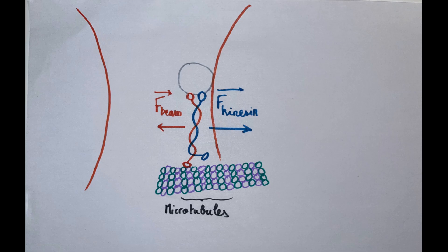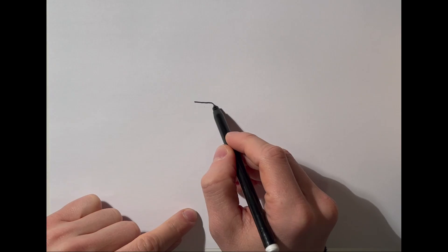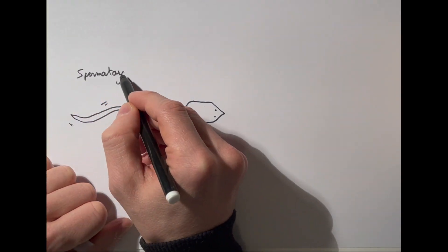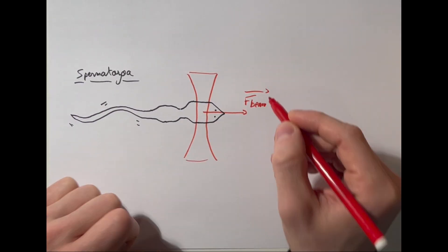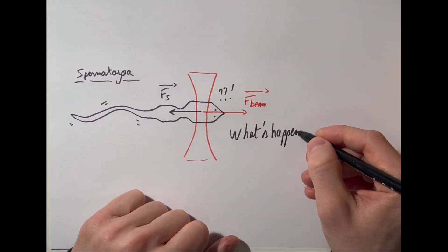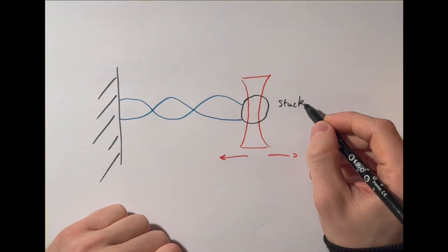Now, let's see some concrete applications. Optical tweezers are used in many fields of science. In biophysics, they can be used to study the forces exerted by molecular motors such as kinesin. In cell biology, they help manipulate cells without damaging them, such as spermatozoa. They are also crucial for measuring nanoscale interactions, for example, between DNA and proteins.